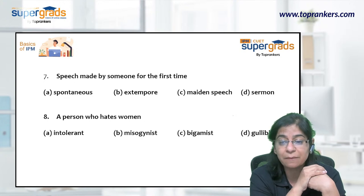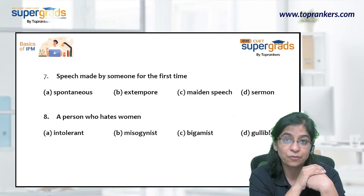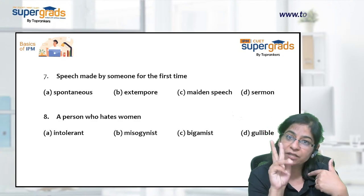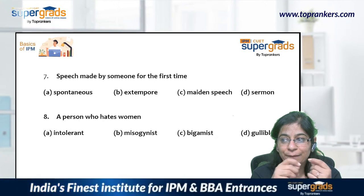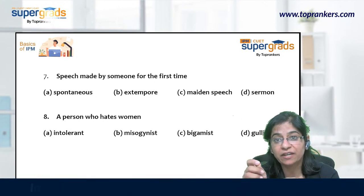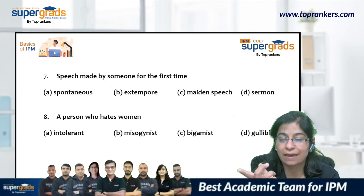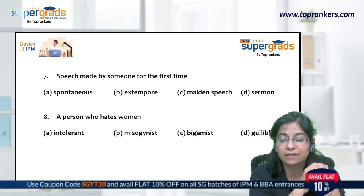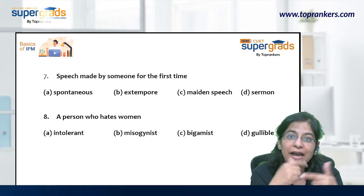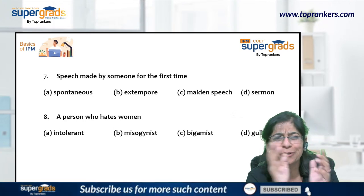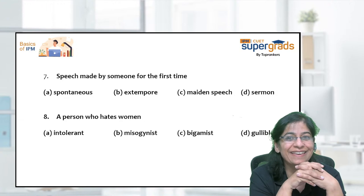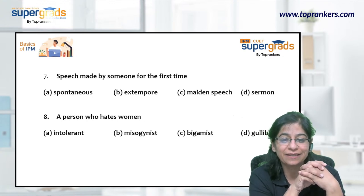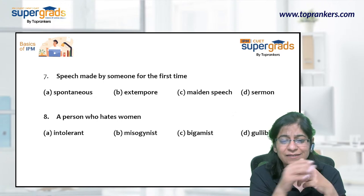Option C is bigamist — 'gami' is a root word meaning marriage, and 'bi' means two. So a bigamist is a person who enters into marriage when already legally married to someone else. Intolerant means someone who cannot tolerate. Gullible refers to people who readily believe others — these are naive people who trust easily. The answer is option B — misogynist.